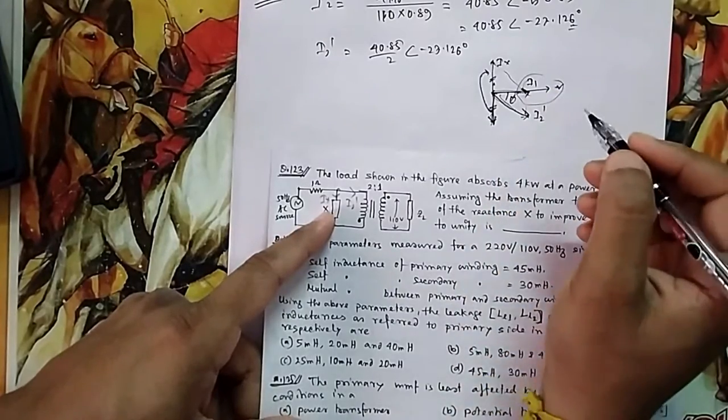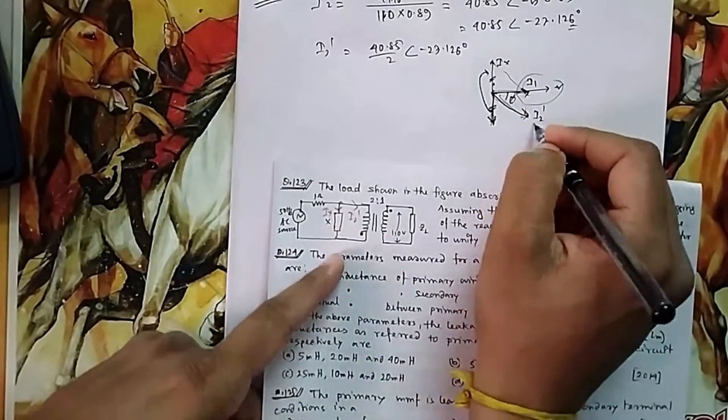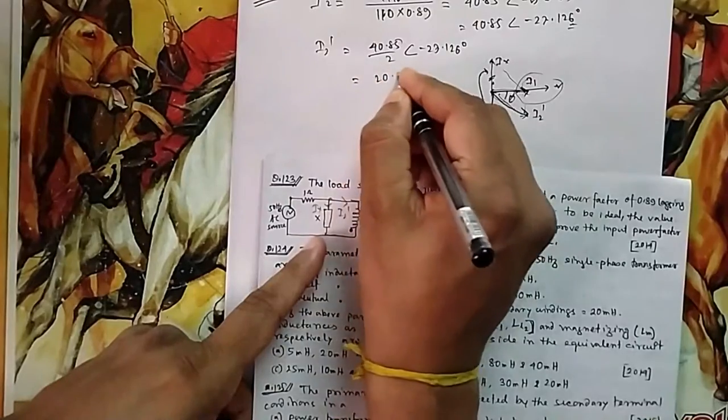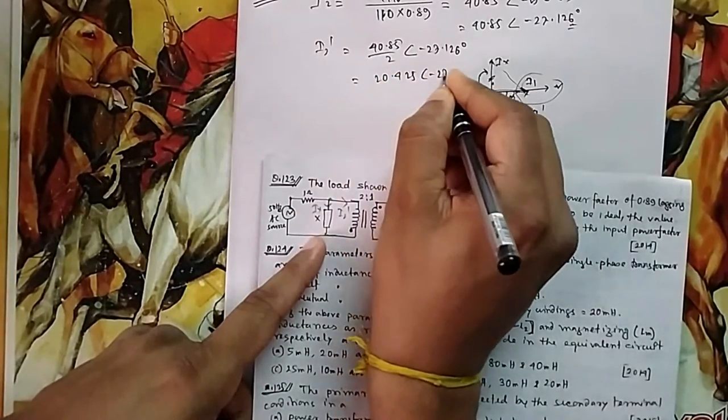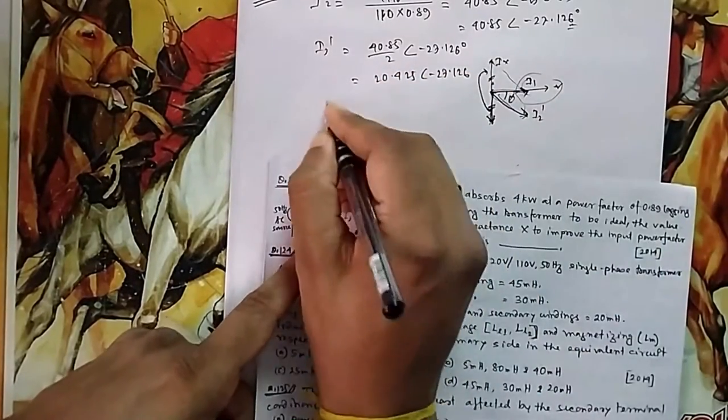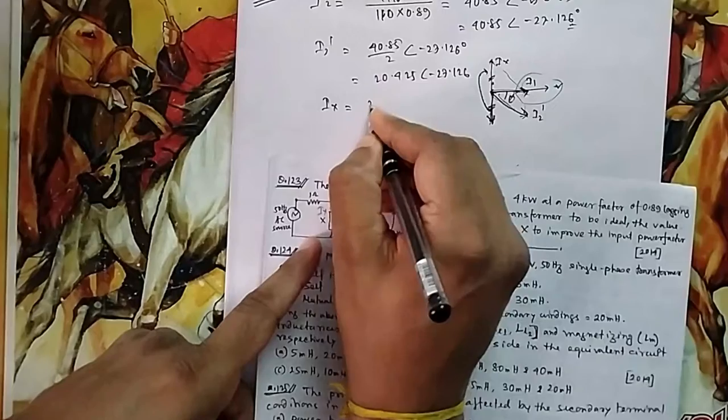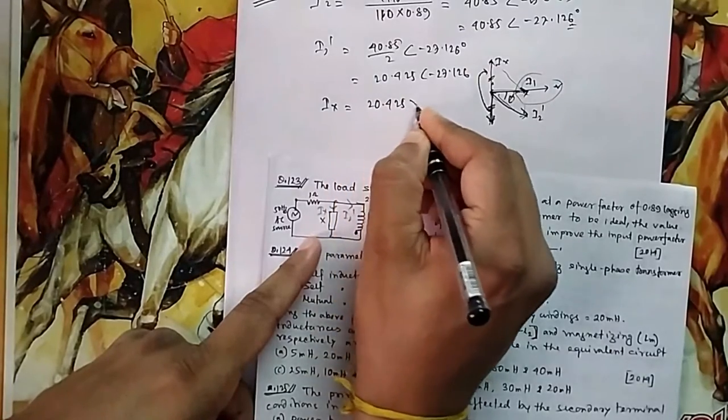If horizontal component comes out, then it will be in phase. So what is this vertical component? This I2 dash is equal to 20.425 angle minus 27.126.